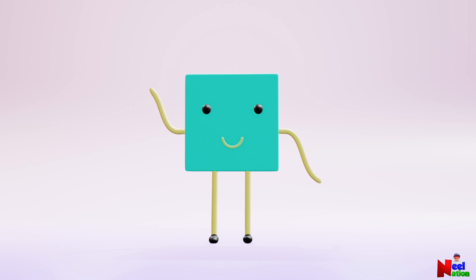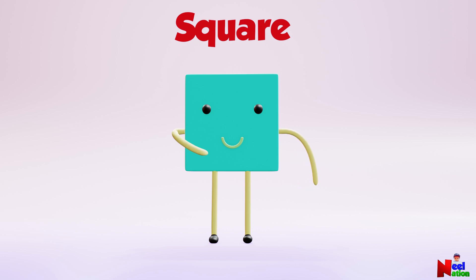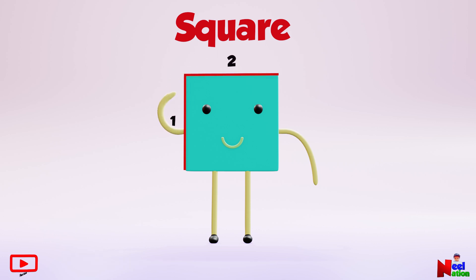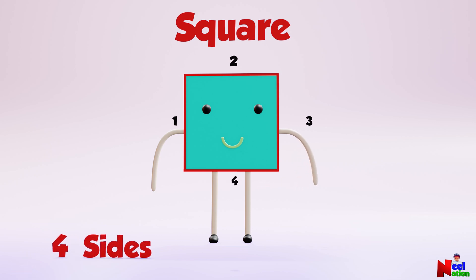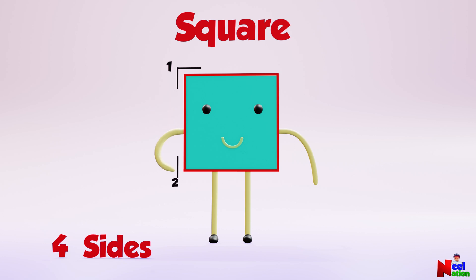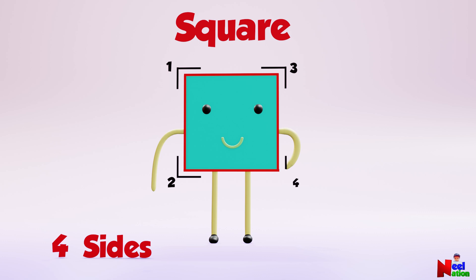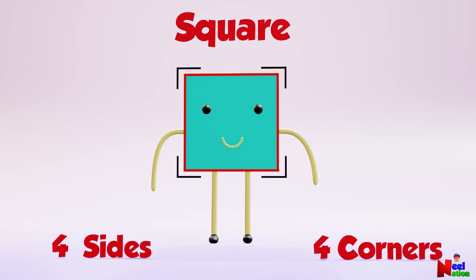Hi. I am a square. I have one, two, three, four — four sides. And one, two, three, four — four corners.